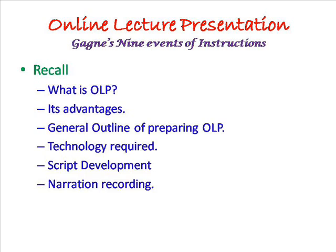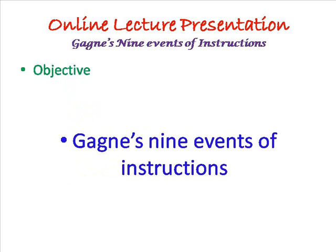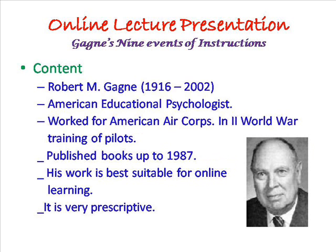Today we will see what is Gagne's approach, that is his 9 events of instructions. Robert Mills Gagne, 1916–2002, was an American educationist and psychologist. He also worked for the Army Air Corps for training of pilots during World War II. During this period, he developed 9 events of instructions. He wrote and published books up to 1987.